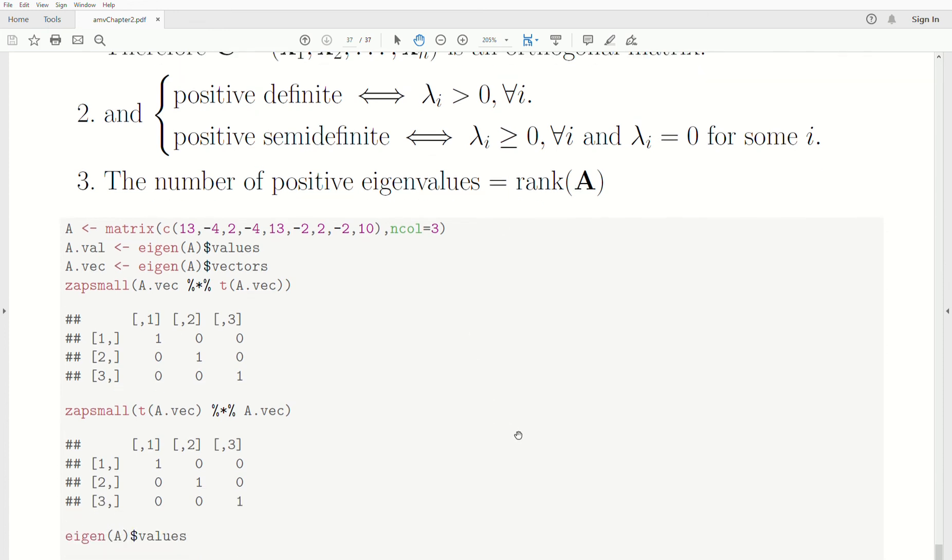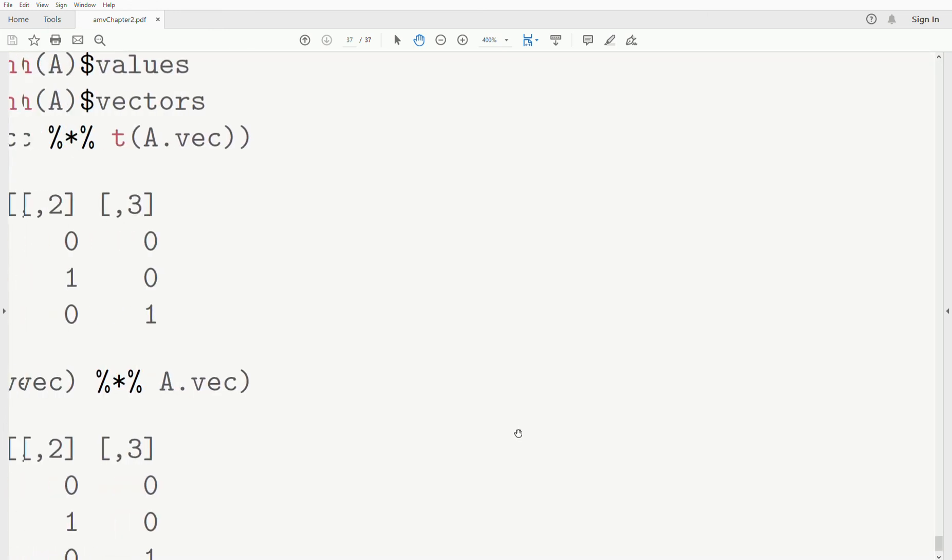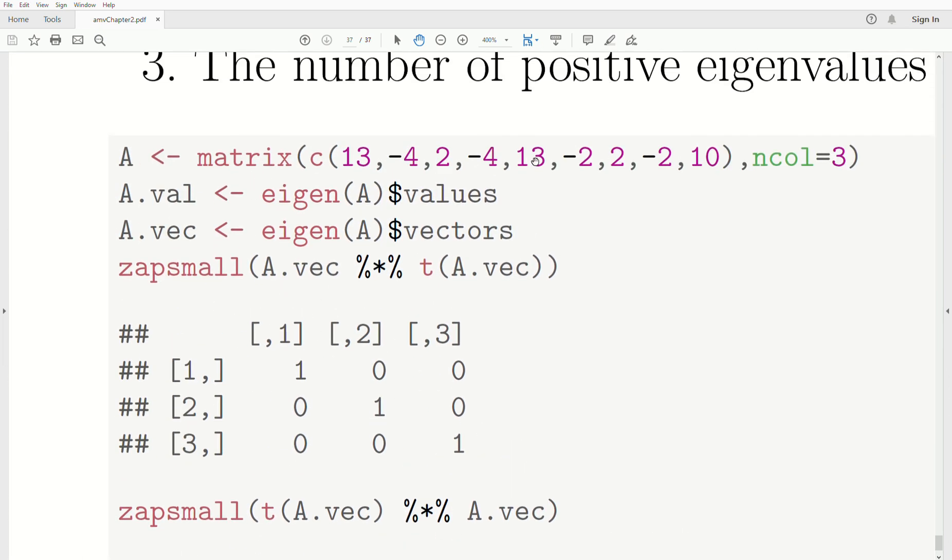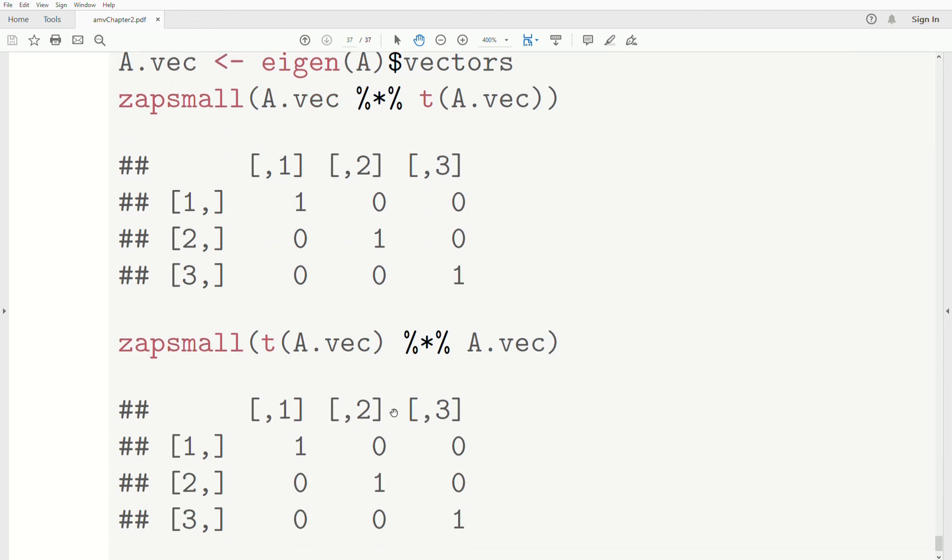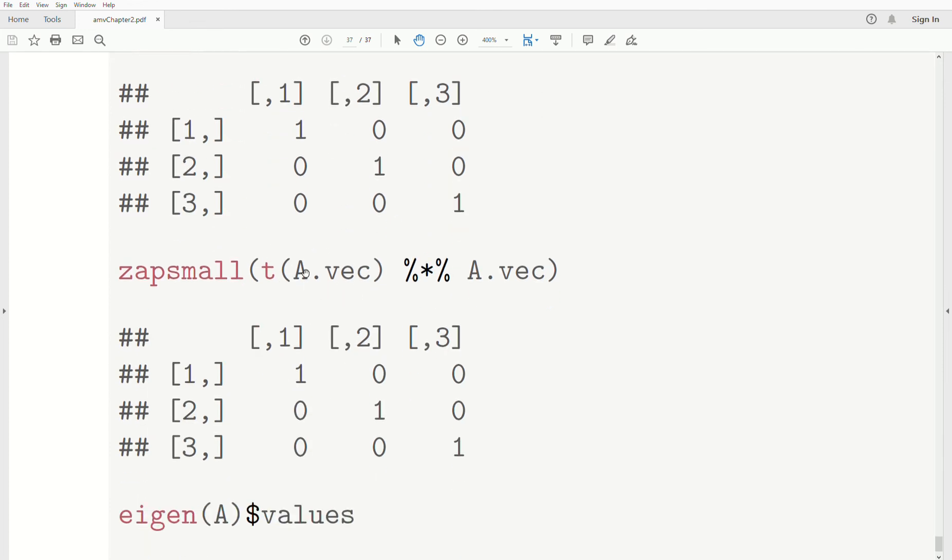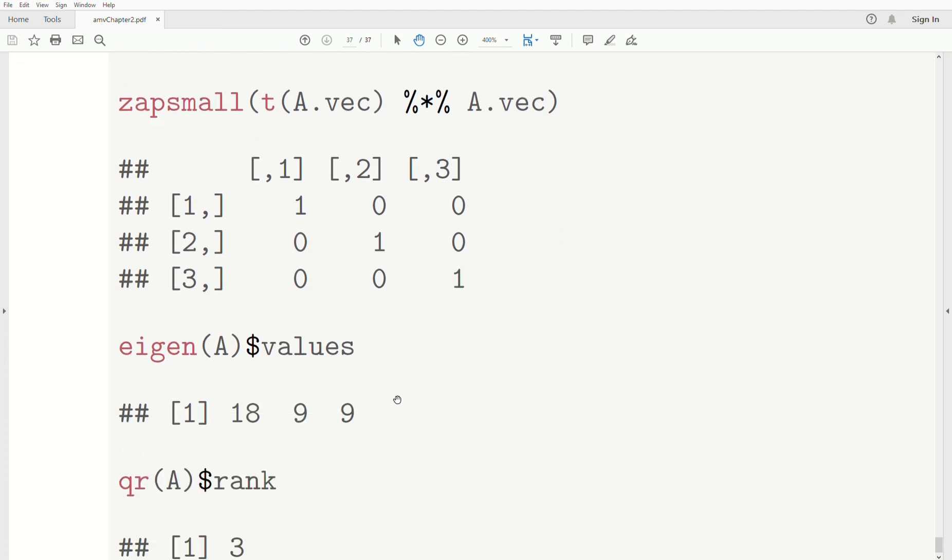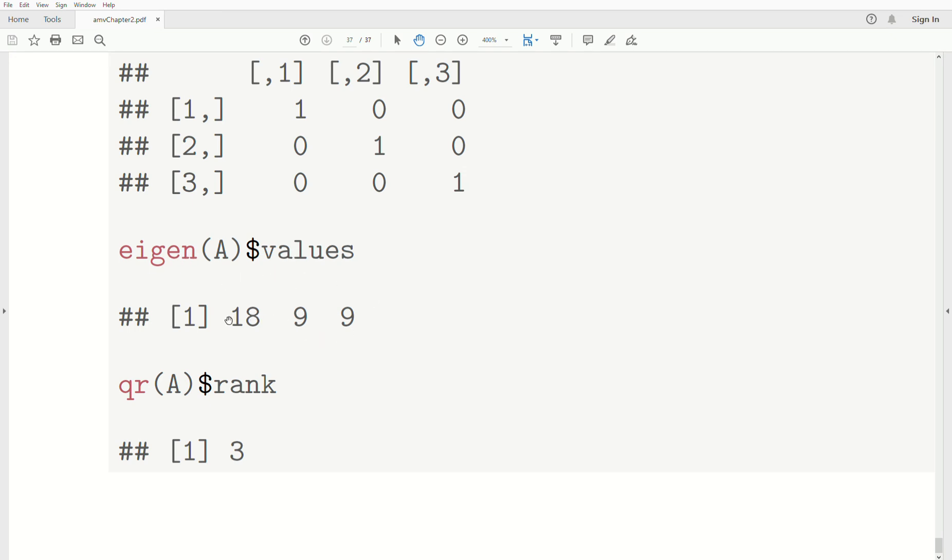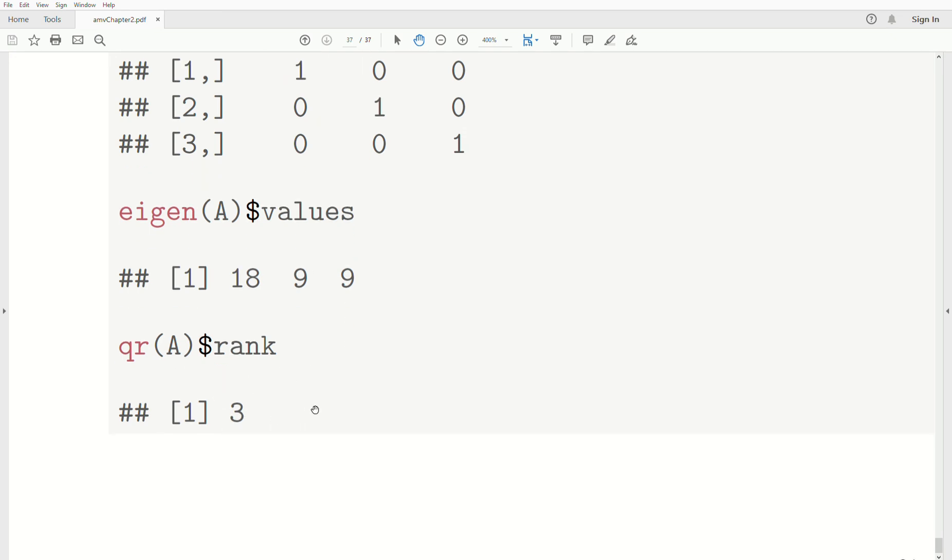To see this in R, we have a symmetric matrix A. We store the eigenvalues in this character and the eigenvectors in A.vec. If we look at A.vec with the transpose of A.vec, it's the identity matrix. That tells me this is an orthonormal matrix. And if we look at the transpose of the eigenvectors times the eigenvectors, it's also the identity matrix. The eigenvalues are 18, 9, and 9. Notice there's three positives. If we look at the rank of A, it's three because those are linked together.